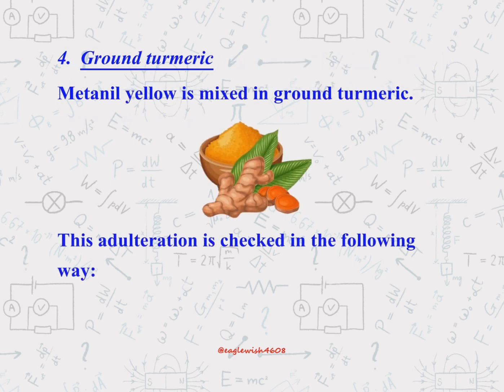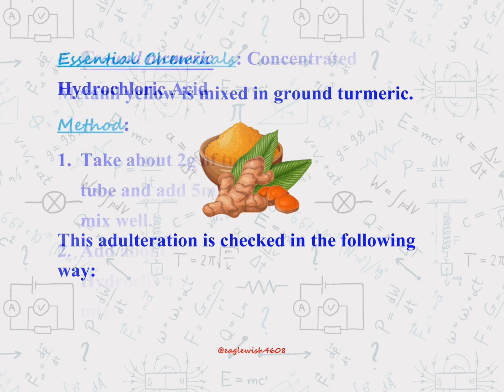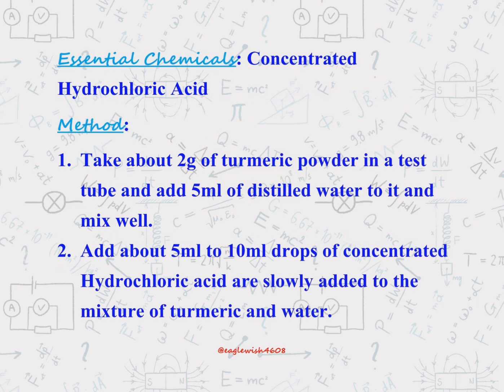Do you know ground turmeric is often adulterated with metanil yellow, a harmful chemical? We'll explain the chemical method and the essential chemicals needed for detection of the adulterant which is mixed in turmeric.